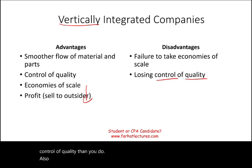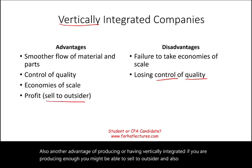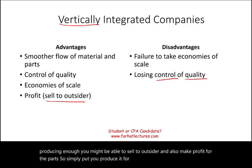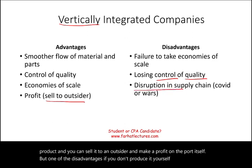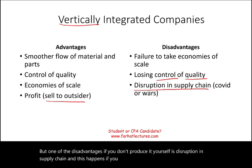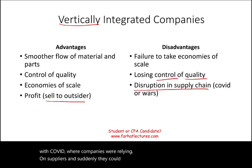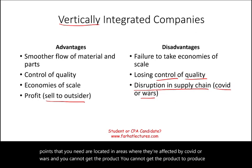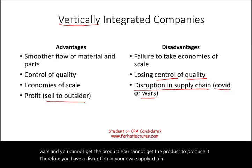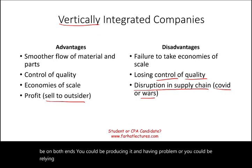Another advantage of vertical integration is that if you produce enough, you might be able to sell parts to outside parties and make a profit on the parts themselves — producing for your own product and selling the surplus externally. However, a key disadvantage of outsourcing is disruption in the supply chain. This can happen during wars or events like COVID, where companies relying on suppliers suddenly could not get the parts they needed, causing disruption in their own production.